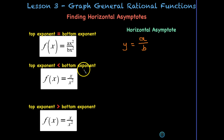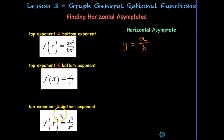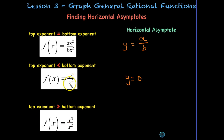In our second situation, the top exponent — x to the 1st power — is less than the bottom exponent, x squared. If that's the case, then we have a horizontal asymptote of y equals 0 every time. It doesn't matter what numbers are in front of our x terms; we always know that we have a horizontal asymptote of y = 0.